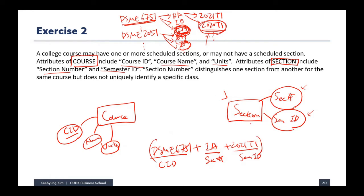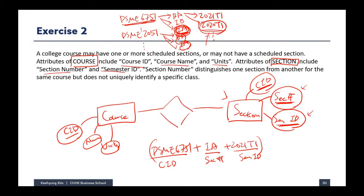We don't have course ID in the section entity, so we can bring it from the course table and add it here. So course ID, section number, and semester ID — these three attributes are used together as a primary key, and we underline all three. Then we make a relationship between the two: course offers a section.